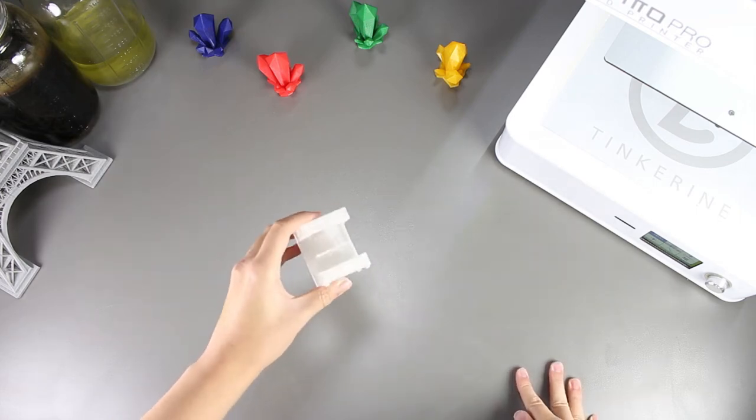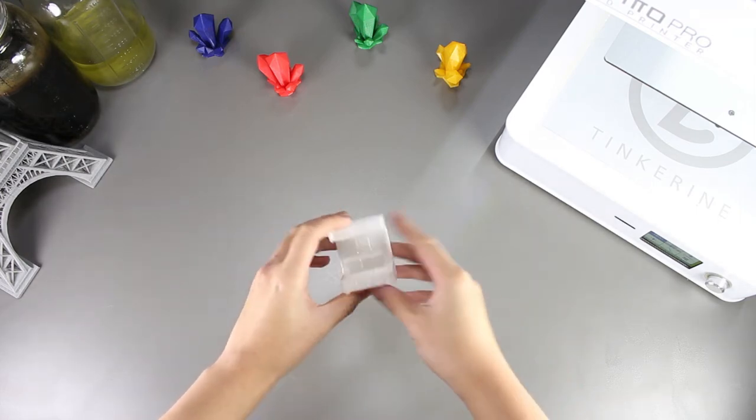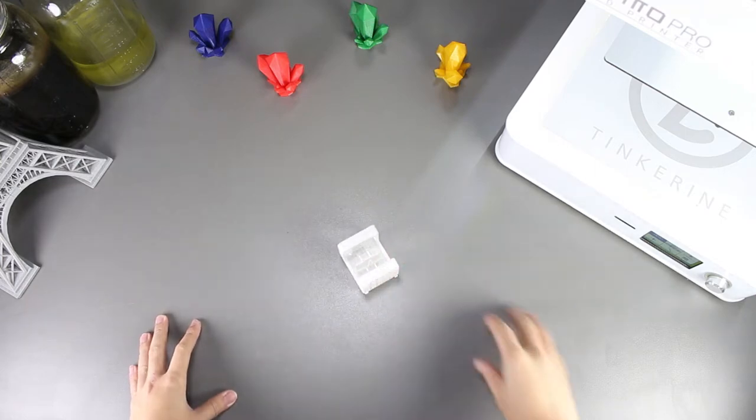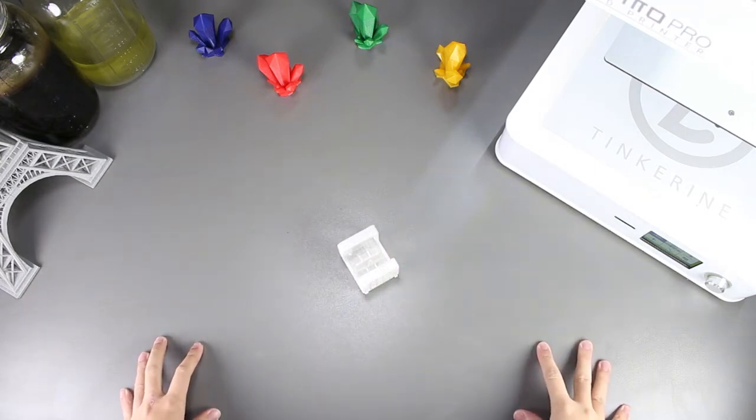Welcome to another episode of Tinkering Experiments. In this episode, we will be revisiting using a microwave to try and smooth out our 3D printed PLA parts.